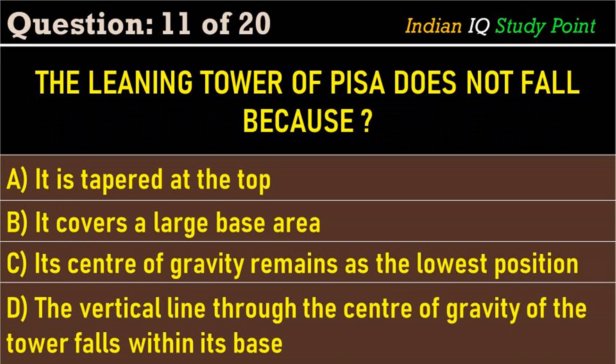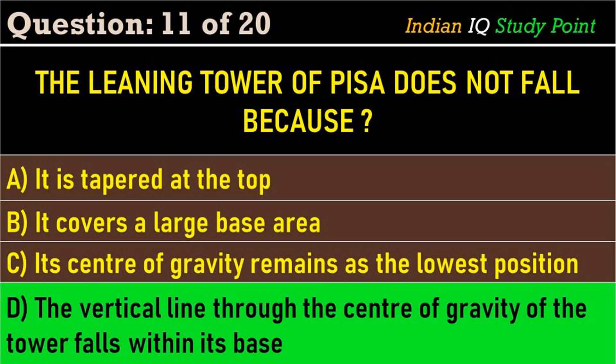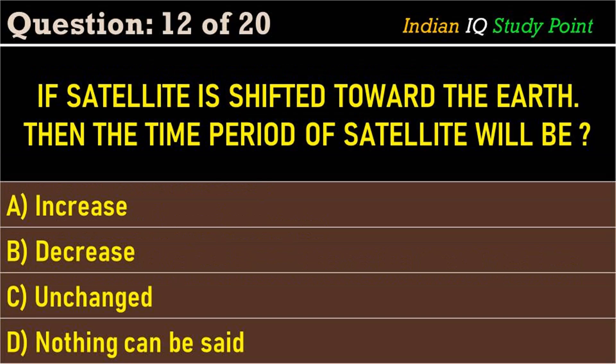Coming to the next question: the Leaning Tower of Pisa does not fall because — option A: it is stapled at the top. Option B: it covers a large base area. Option C: its center of gravity remains at the lowest position. Option D: the vertical line through the center of gravity of the tower falls within its base. The correct answer is option D: the vertical line through the center of gravity of the tower falls within its base.